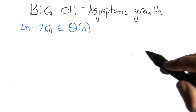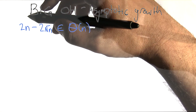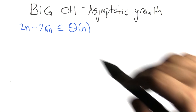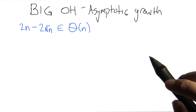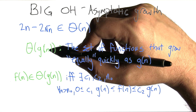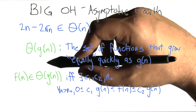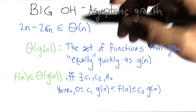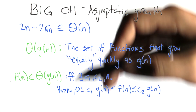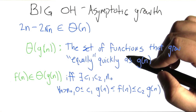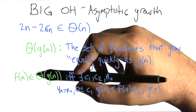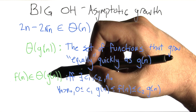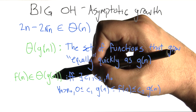You may have heard it described in the form of big O notation. We're going to get to big O in a moment, but we need to start off with big theta. Big theta of a function g of n is actually a set of functions — specifically the set of functions that grow equally quickly as g of n. So to be a bit more formal about it, we say that some function f of n is in the set of functions equally fast-growing as g of n.